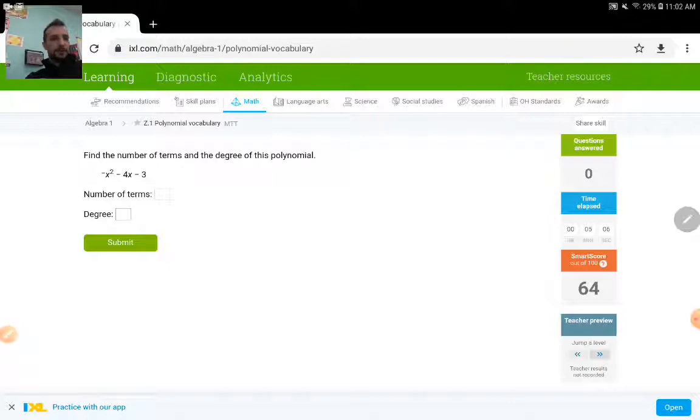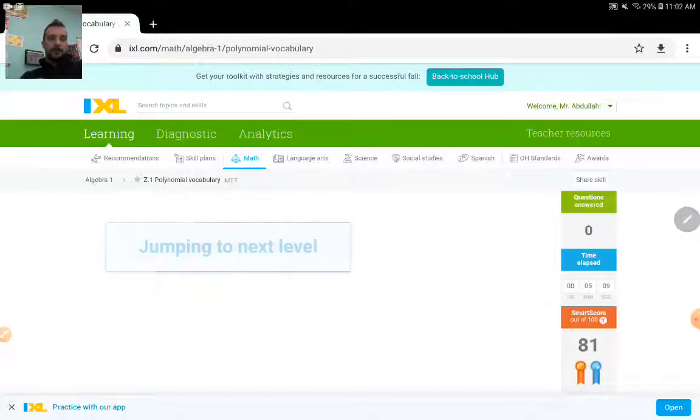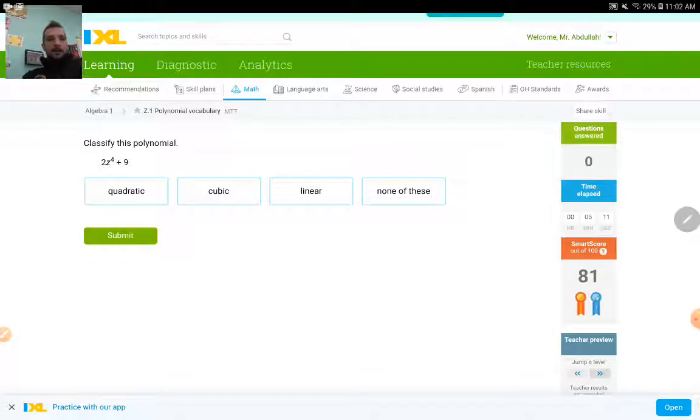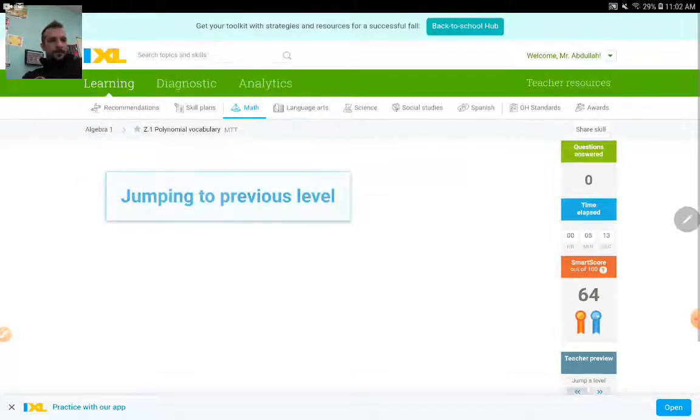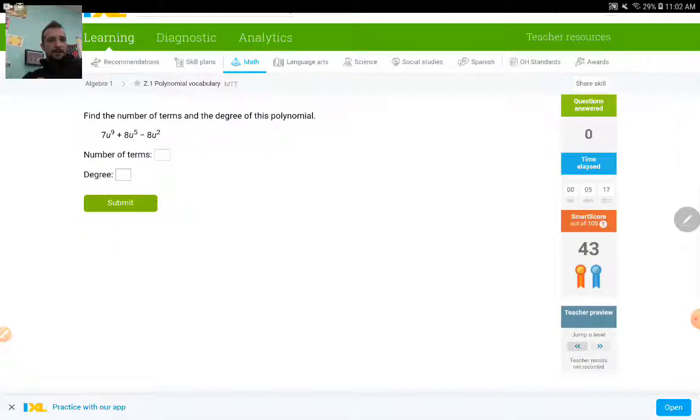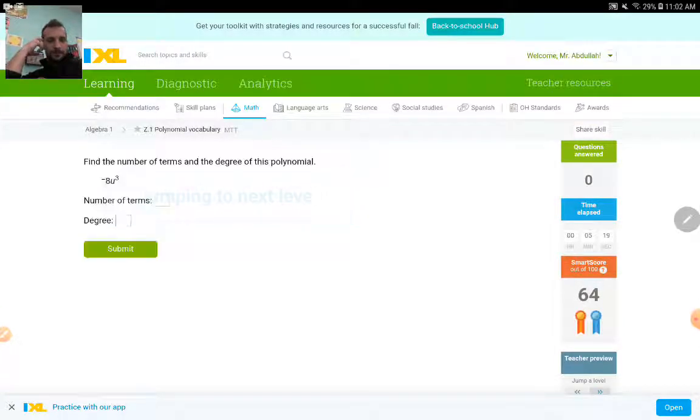Okay. Moving on to the next one. Hopefully. Okay. Did I skip two levels? I think I did. Let me just do this one. Okay. Number of terms. There's only one term. Negative 8u cubed. Because I'm not adding anything else to this. I'm not subtracting anything else from this.